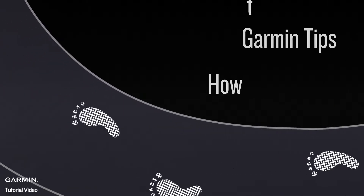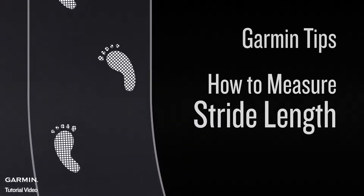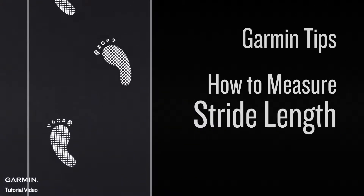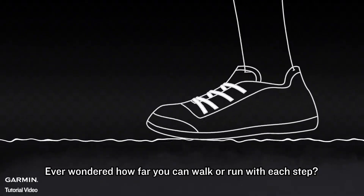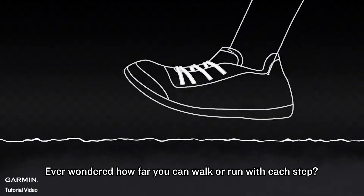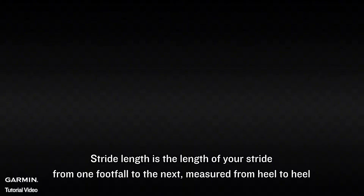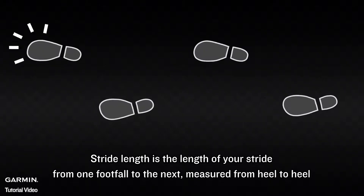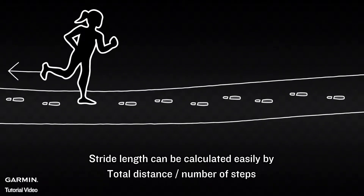Garmin tips: how to measure stride length. Have you ever wondered how far you can walk or run with each step? Stride length is the length of your stride from one footfall to the next — measure it from heel to heel.